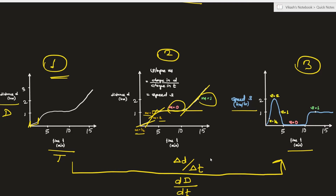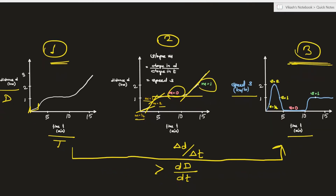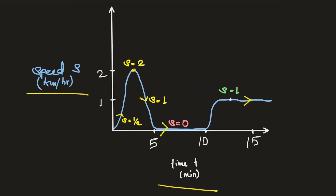This is exactly what we call the first order derivative — what we have here on figure three. Now if we want to do the derivative of the progress on figure three, that will be called the second order derivative. Let's have a quick look at that. This is the graph representation of the first order derivative, which is differentiation of distance over time.